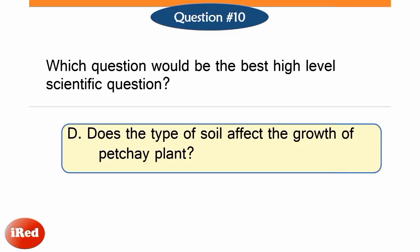The correct answer is letter D. A good scientific question should be objective and testable. An example of a testable scientific question is one that includes two variables — the independent and dependent variable. Option D, 'Does the type of soil affect the growth of the Pachai plant?' has an independent variable, which is the type of soil, and a dependent variable, which is the growth of the plant.